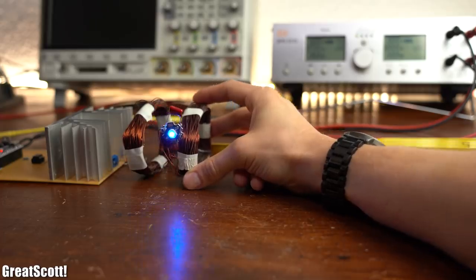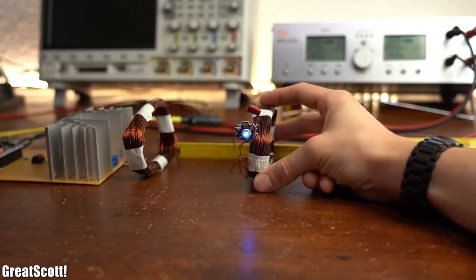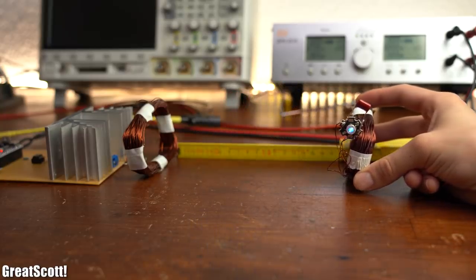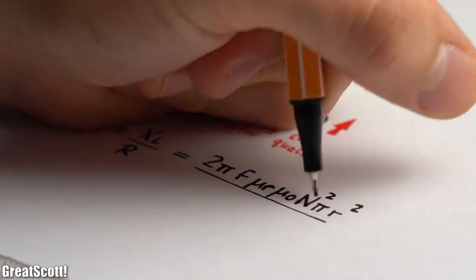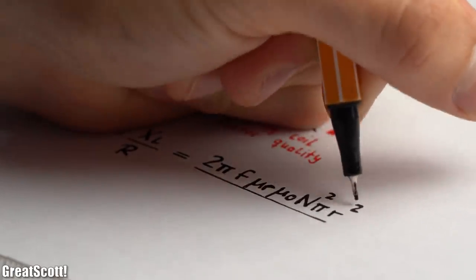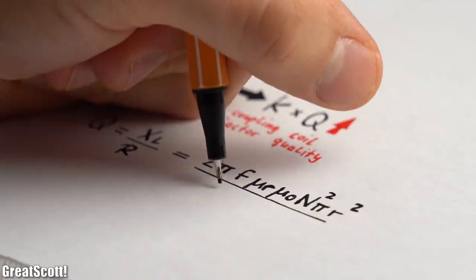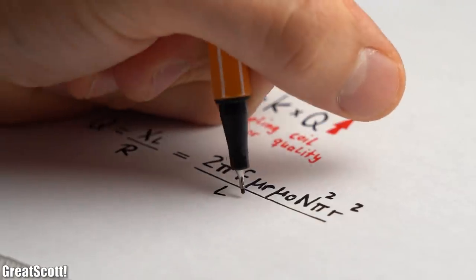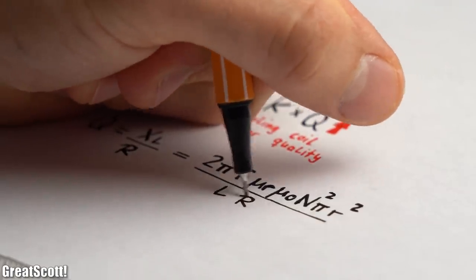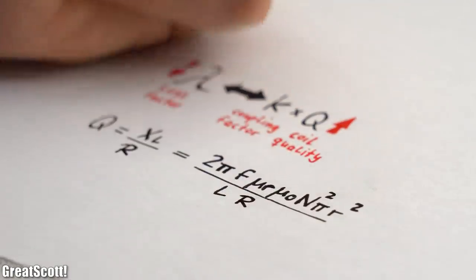Sadly, the coupling factor will always be low and get even worse when we put more distance between the coils. Therefore, we have to keep the coil quality as high as possible, and as you can see in this formula, the amount of windings and the diameter play a super important role.